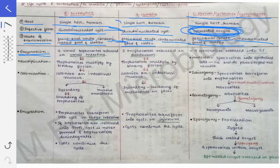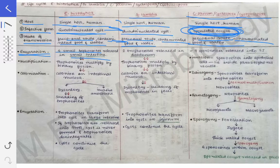Once excystation occurs, four small trophozoites will be released in the small intestine. Why four? Because there were four nuclei in that cyst — each nucleus will develop into one trophozoite. So four small trophozoites are released into the small intestine in the case of Entamoeba histolytica.